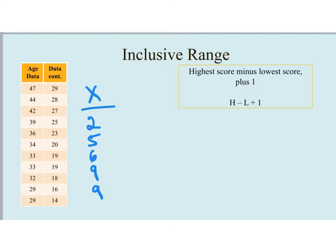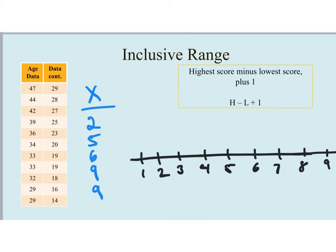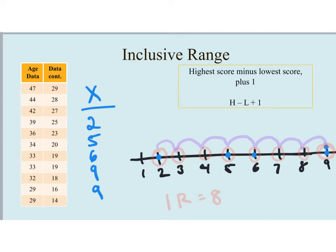Let's look at the exclusive and inclusive range one more time with a new data set for x. Plotting raw scores of 2, 5, 6, and two scores of 9 on a number line: for the inclusive range, we count every number from the lowest to the highest including the endpoints — that's 2, 3, 4, 5, 6, 7, 8, 9, giving 8 different numbers, so the inclusive range is 8. For the exclusive range, measuring movement from lowest to highest: 1, 2, 3, 4, 5, 6, 7 — the exclusive range is 7.